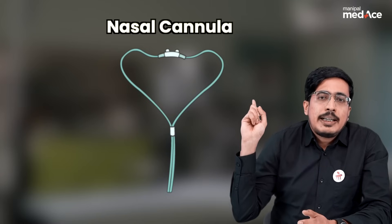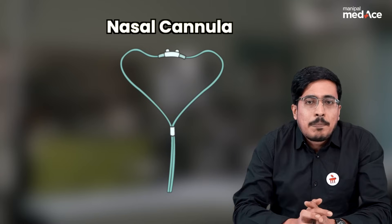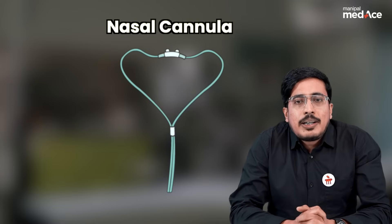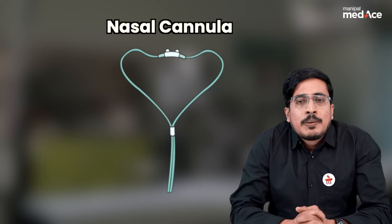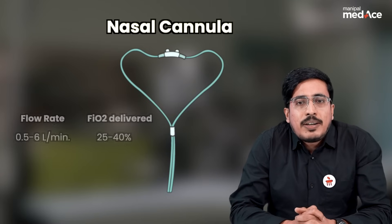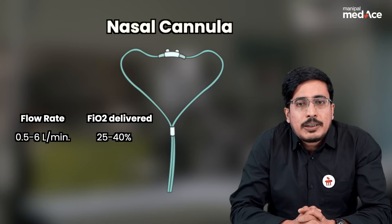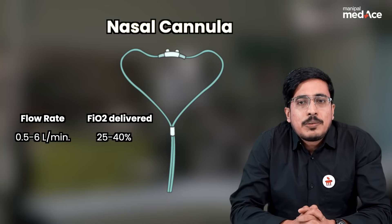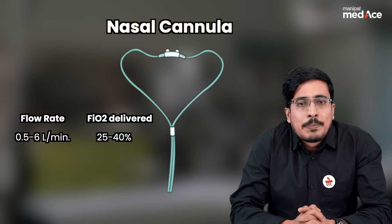The first low flow device is the nasal cannula. It can deliver a flow of 0.5 to 6 liters per minute to the patient, and the maximum FiO2 provided is 40 percent.